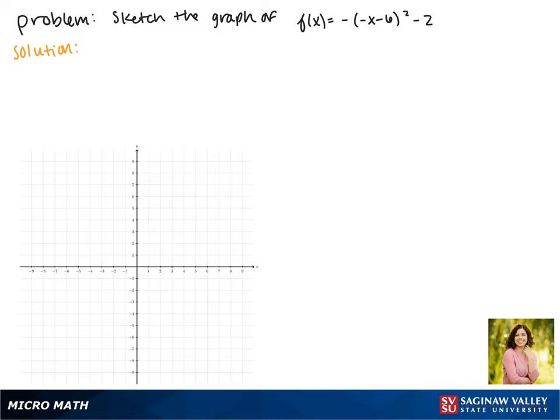We'll start by looking at the parent function, which is f of x equals x squared. Notice that the vertex is at the point zero zero.